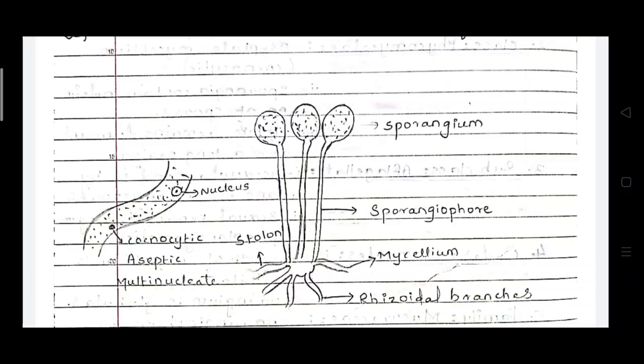At the tip above the sporangiophore, the sporangium is present. The cells are aseptate and having a single nucleus or multi-nucleate state. That's why this mycelium is called the coenocytic mycelium. As you can see in the left hand figures, there is the aseptate body and two nuclei, so the mycelium of Rhizopus contains the coenocytic condition.